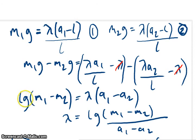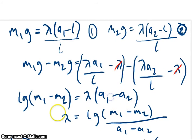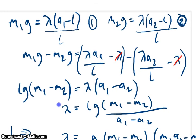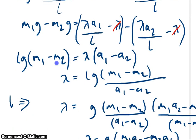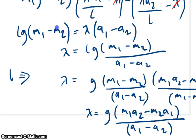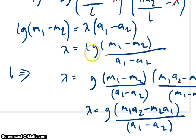Now, very simply, I just want to get rid of the A1, A2 from this side of the equation. Move it to the other side. And then I'm left with a nice, easy formula. So, lambda is equal to Lg M1 minus M2 over A1 minus A2.